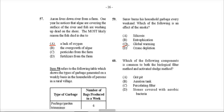Question 60 — the final question: Which component is common to both the biological filter method and the activated sludge method of sewage treatment? The stage common to both would be A — the grit pit, where solid waste settles and starts to coagulate. The aeration tank is only in the activated sludge method. The percolating filter and stones covered with aerobic bacteria are components of the biological filter method only. So A — the grit pit — is the correct answer. That brings us to the end of this specimen paper.